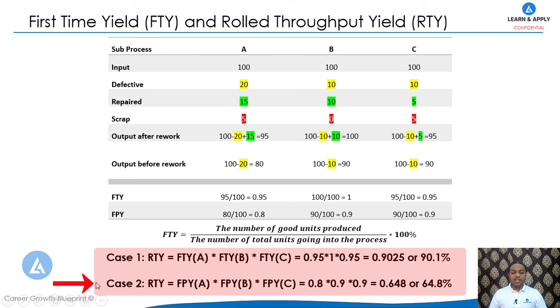Comparing the RTY from both formulas, we can see a significant difference. In the first formula, rework is considered acceptable output. In the second formula, rework is not considered — giving a truer picture of process performance.